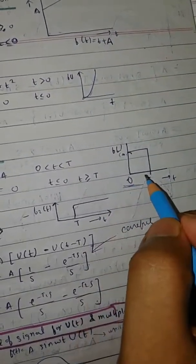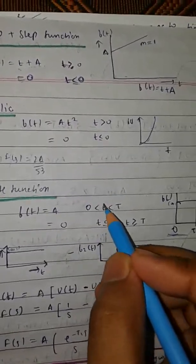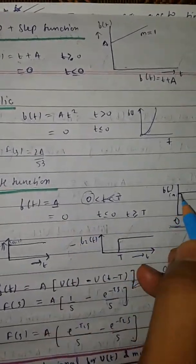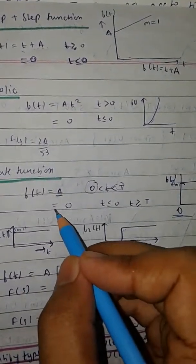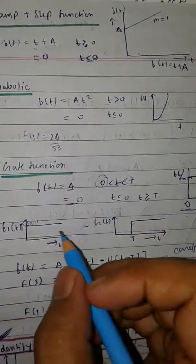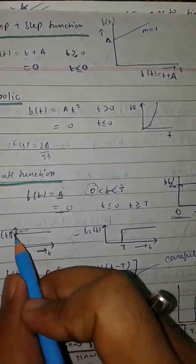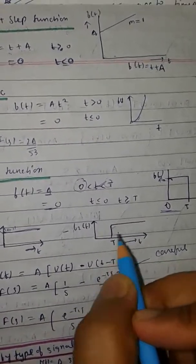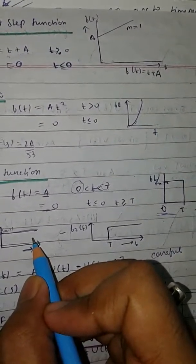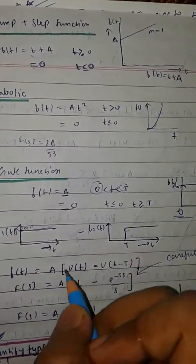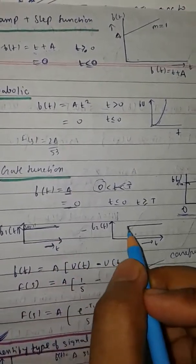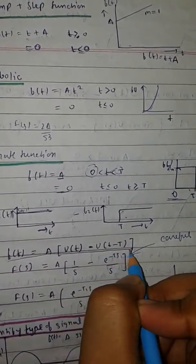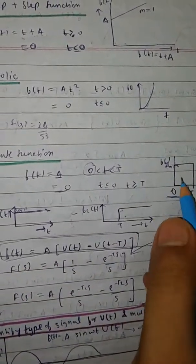Now the most important function is the gate function. Any function you see that is 0 from 0 to T, then the function exists — this is an example of a gate function. For time less than the time period but greater than 0, it is some constant, and for remaining values it is 0.